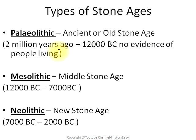The Stone Age itself is divided into three periods. The first is the Paleolithic, or Old Stone Age, which lasted from two million years ago to 12,000 BC — no evidence of people living in Ireland during this period has been found. The second is the Mesolithic, or Middle Stone Age, from 12,000 BC to 7,000 BC. The third is the Neolithic, or New Stone Age, from 7,000 BC to 2000 BC.